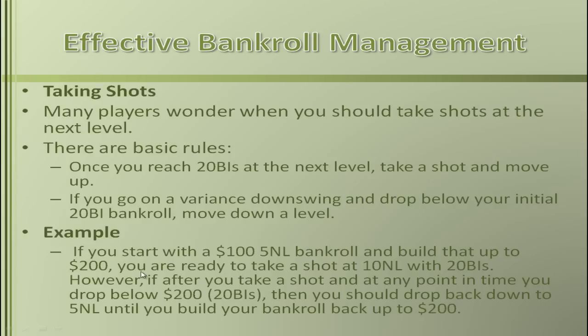For example, let's say you start with a $100 bankroll for $5 NL — that gives you 20 buy-ins. You build that up to $200, which gives you 40 buy-ins at $5 NL and 20 buy-ins at $10 NL. At this point you're ready to start playing $10 NL. However, if you start playing $10 NL and go on a variance downswing, it's recommended you drop back down. If you're down 5 buy-ins and get to 15 buy-ins at $10 NL, I recommend you drop back down to $5 NL, build your bankroll back up to 20 buy-ins, and take another shot.